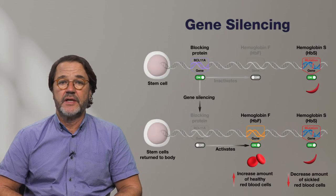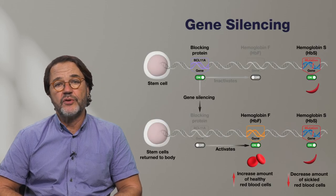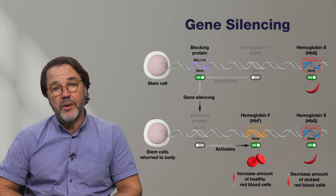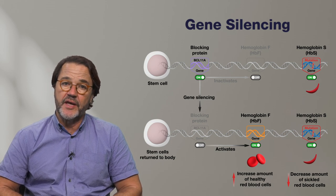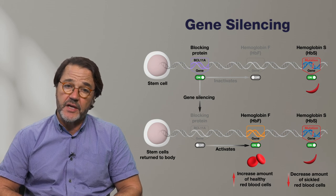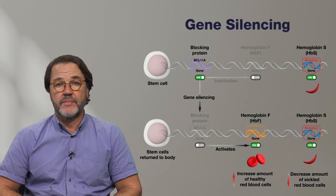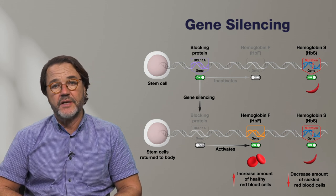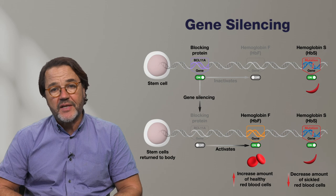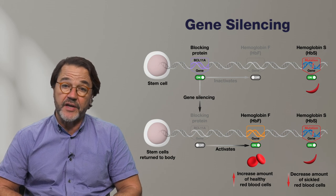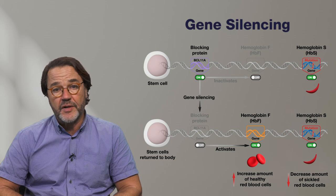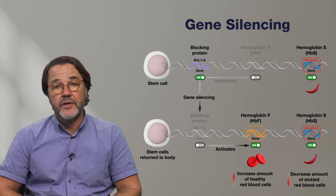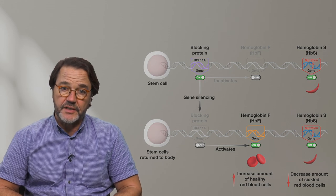In another approach called gene silencing, the gene that produces the BCL11A blocking protein, which inactivates hemoglobin F, is silenced by cutting the gene. By silencing this gene, the gene that makes hemoglobin F can be reactivated, which allows your cells to produce hemoglobin F, which again is non-sickling.